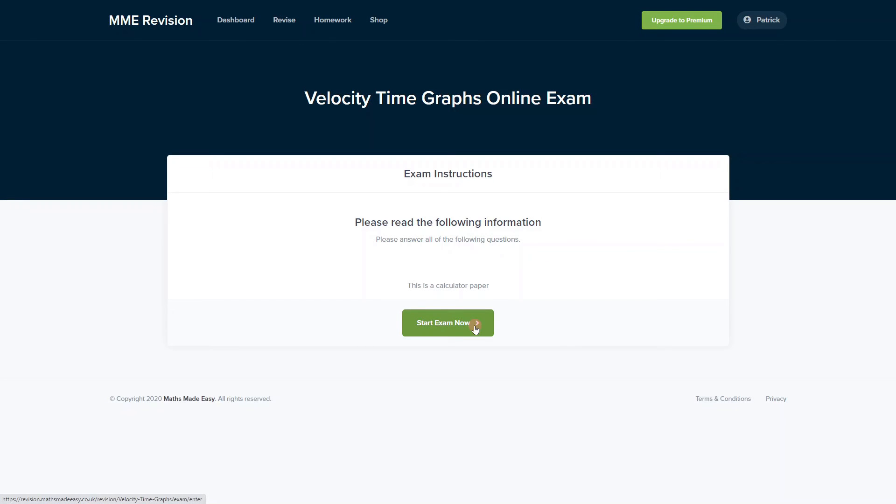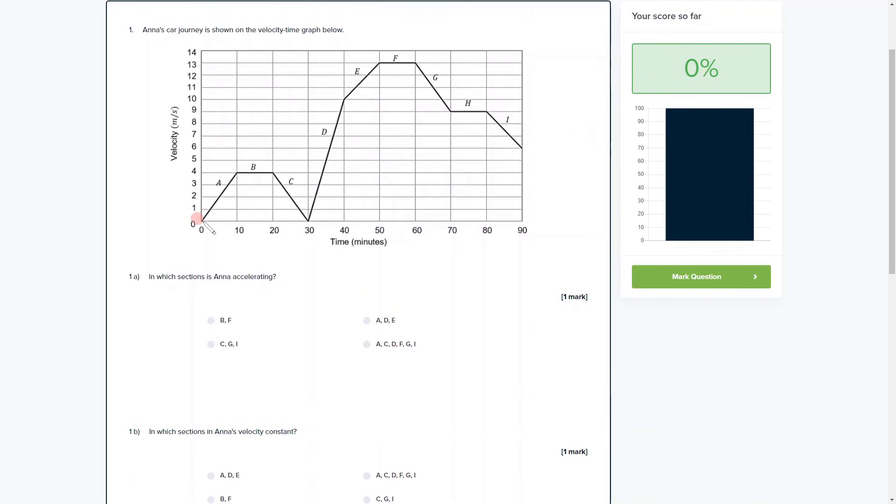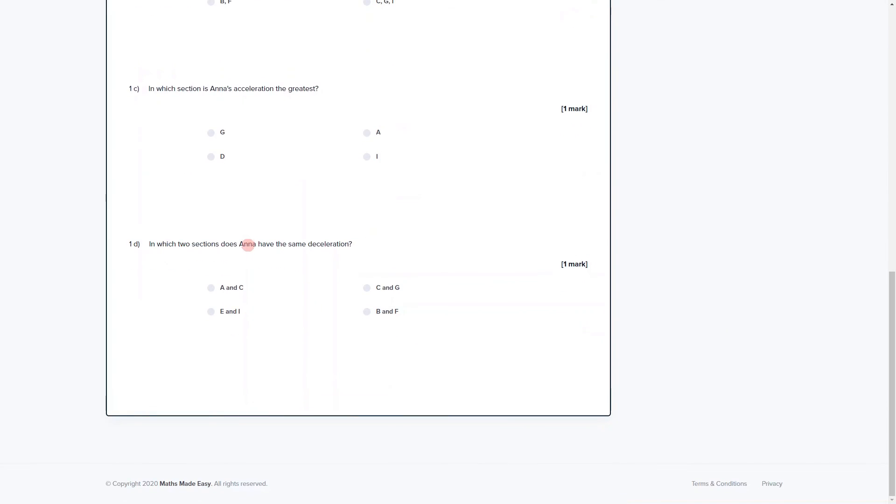If you want to get some practice with velocity-time graph questions, why not practice our online exam? You can get there through our revision platform, and there's loads of different questions to have a go at. You get instant feedback on each and every one of them, which will allow you to keep track of the areas that you're weakest at and need to improve on. If you're interested, then click the link below—it will take you straight there.